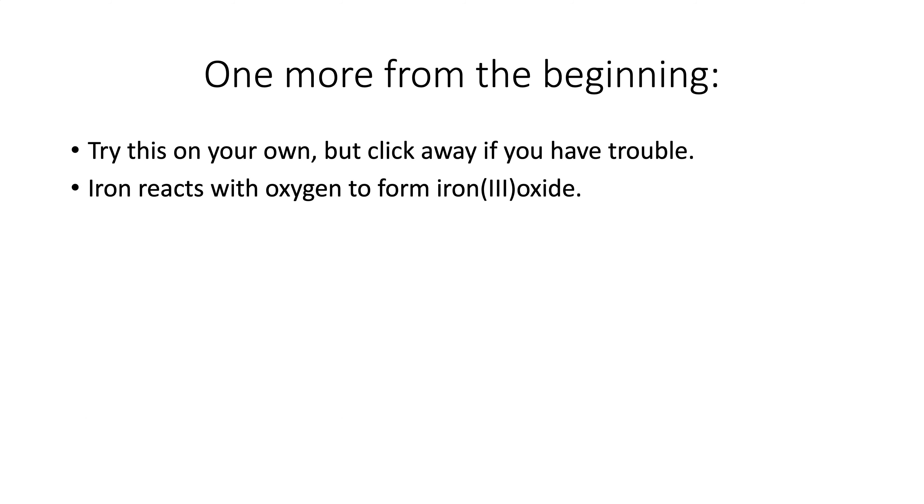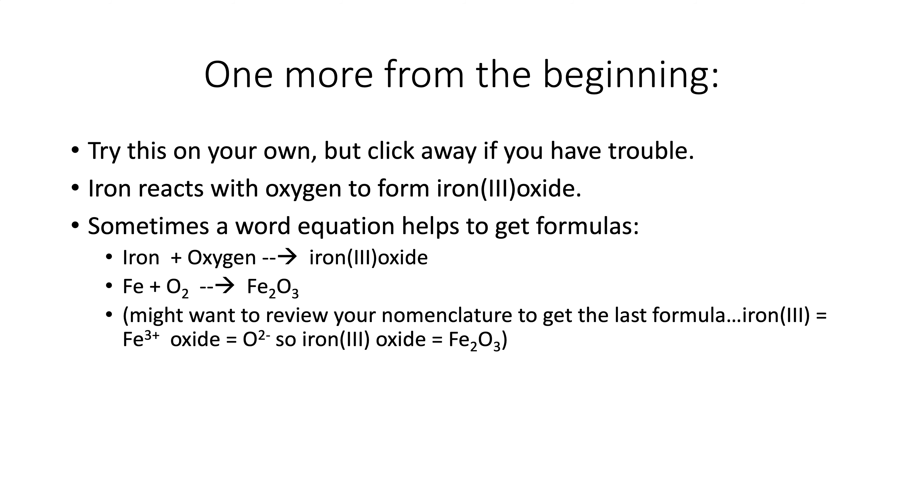Try this one on your own. I'm going to click through it. So the first step is to get the formula. Sometimes you can do an intermediate step, a word equation. Iron plus oxygen gives you iron three oxide. If you need to do that intermediate step, then do that. So iron is Fe. Oxygen, remember the gens are O2. Fe2O3, this is a review from your nomenclature. Iron three plus. Oxygen is a two minus. And so if we're going to put these together, we need to get to six. So we're going to need two of the Fe's and three of the O's. Getting that formula is critical.